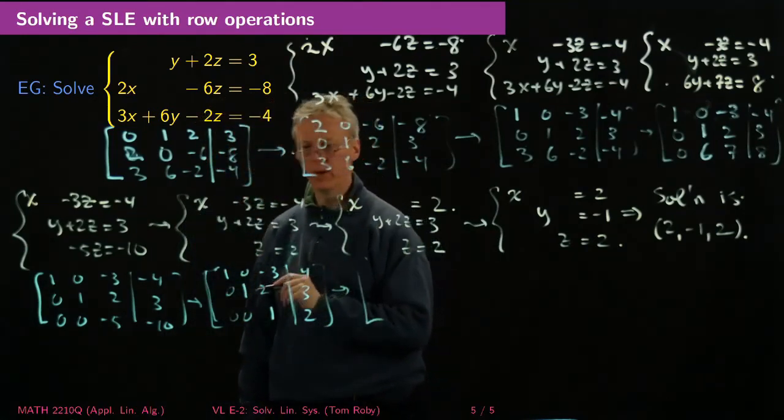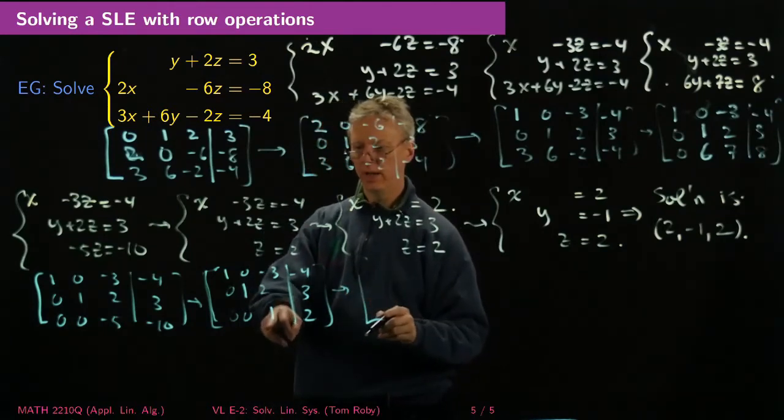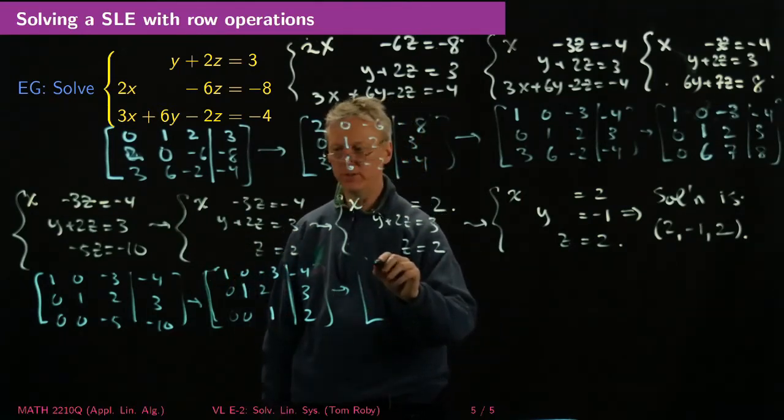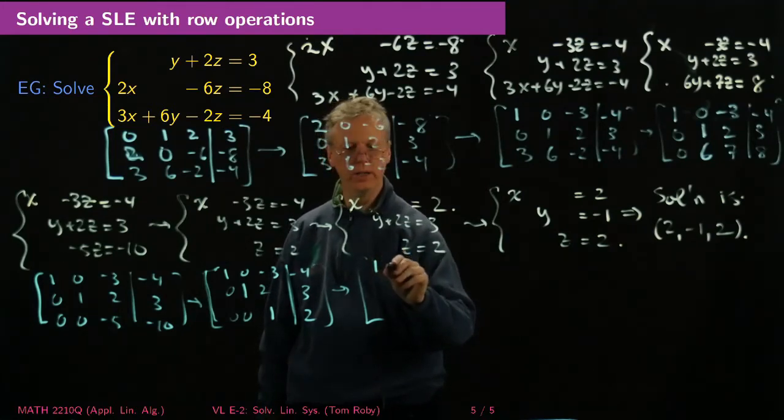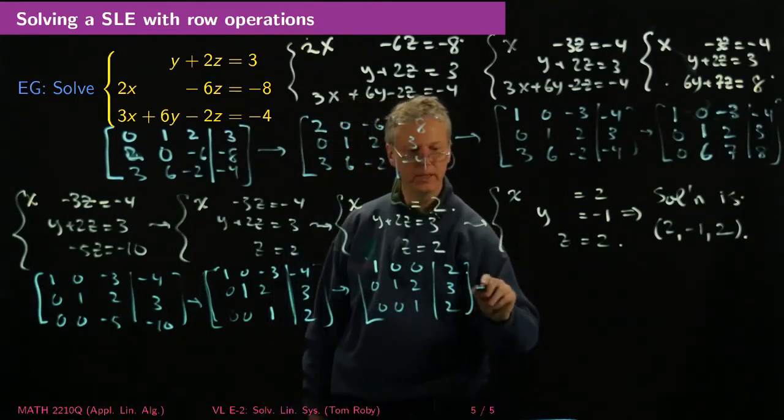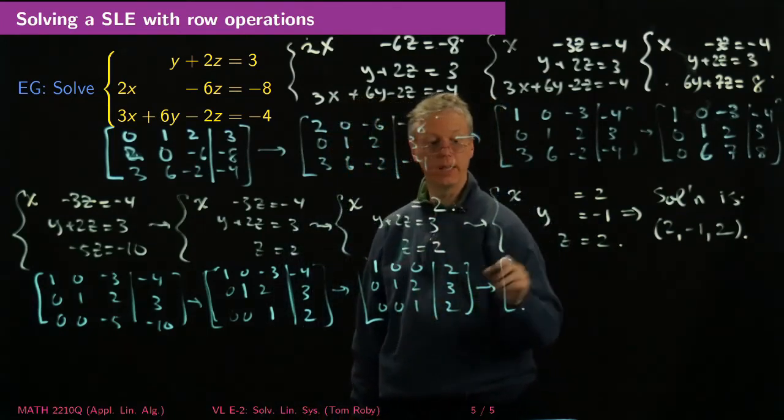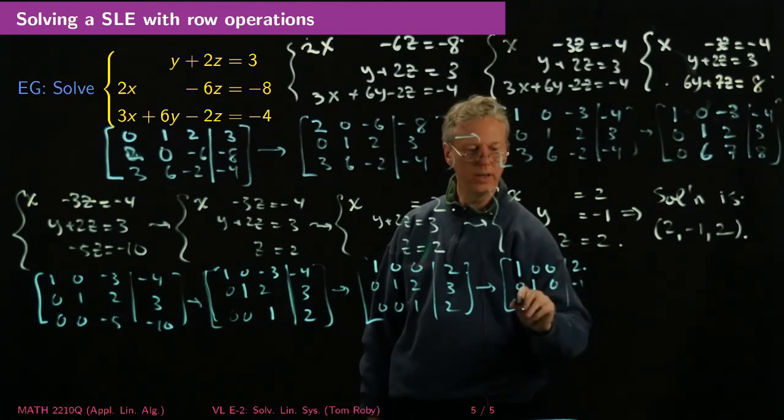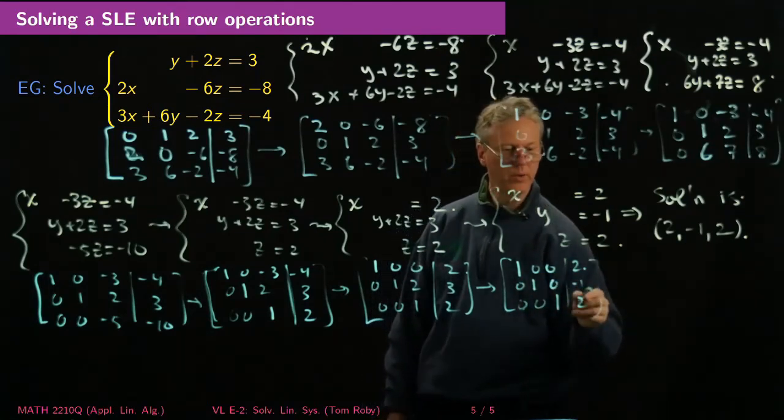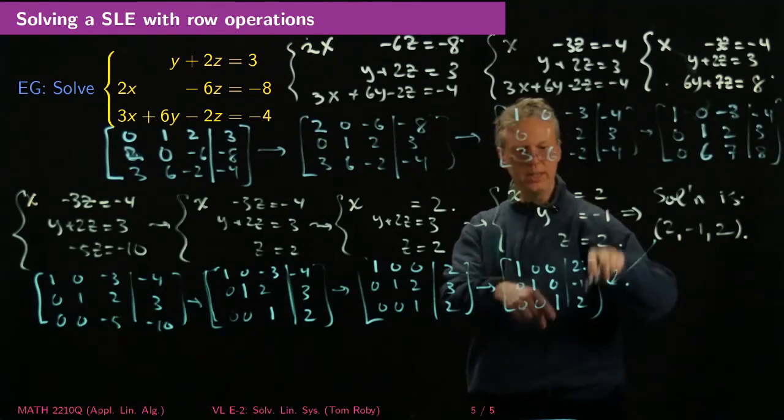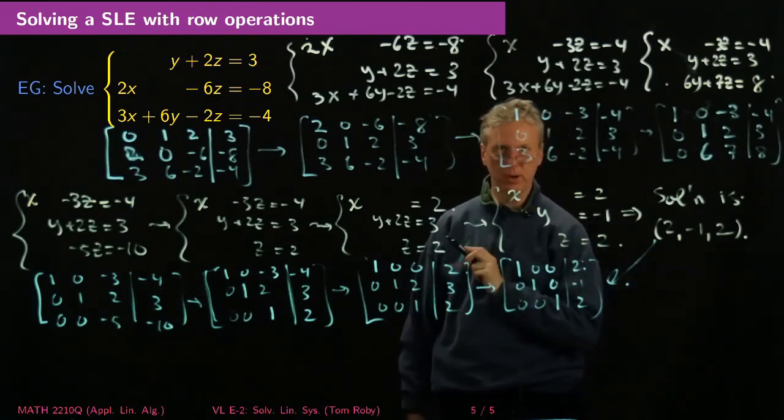So now I do this next row operation and what happens? So I'm using this 1 to 0 out these guys that I use to 0 out other entries, sometimes we call them pivots you'll see that coming up. So now what happened here? I get 1, 0, 0, 2 and then 0, 1, 2, 3 I didn't change that row yet, 0, 0, 1, 2 but that's coming and then finally the last one I'm using this guy to 0 out so I get 1, 0, 0, 2, 0, 1, 0, negative 1 and 0, 0, 1, 2. And so you can see the solution 2, negative 1, 2 is just this the vector here if I think about this as being a column vector this column vector actually represents the solution.